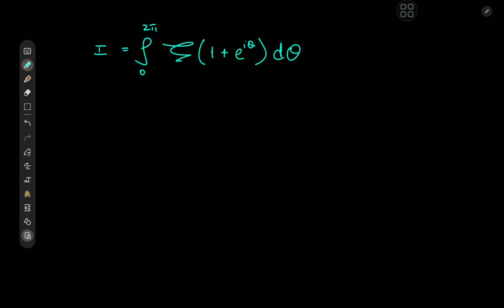We have the integral from 0 to 2π of ζ(1 + e^(iθ))dθ, where ζ is, of course, the Riemann zeta function.